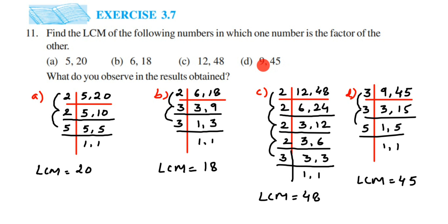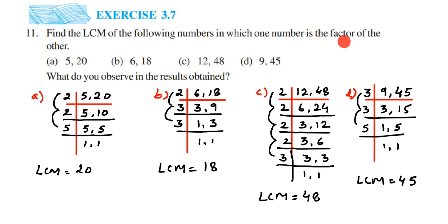Now observe the LCMs we got: LCM of 5 and 20 is 20 — the larger number. LCM of 6 and 18 is 18 — the larger number. LCM of 12 and 48 is 48 — the larger number. And LCM of 9 and 45 is 45 — the larger number. So the conclusion is: in each case, the LCM of the given numbers is the larger number. This is only applicable when one number is a factor of the other — if that's the case, you can directly write the larger number as the LCM without doing any calculation.